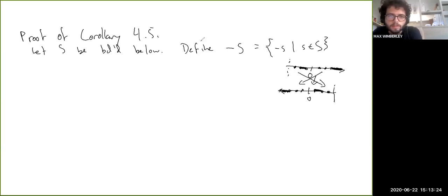That's -S. Now, set s₀ to be the negative supremum of -S. We know that -S is bounded above.